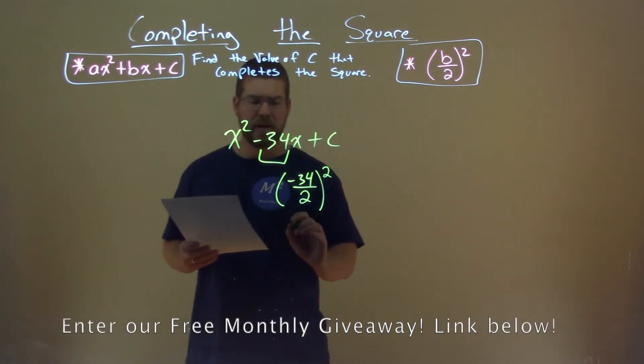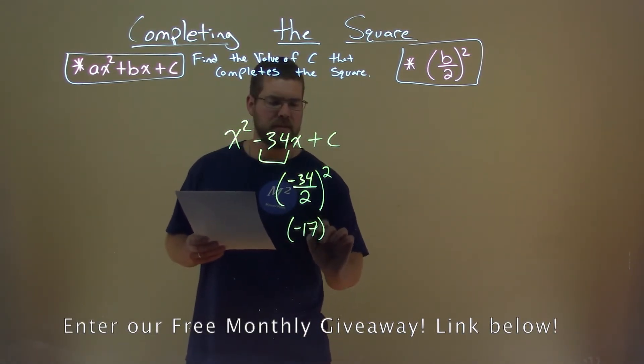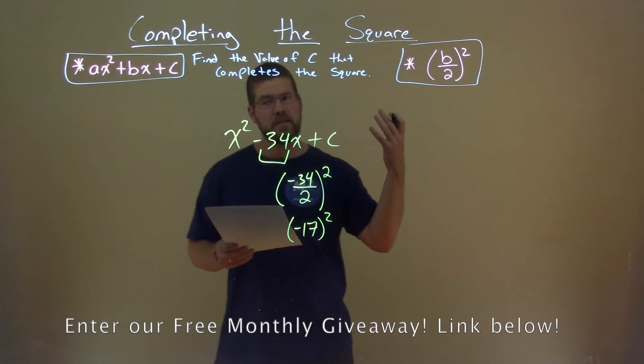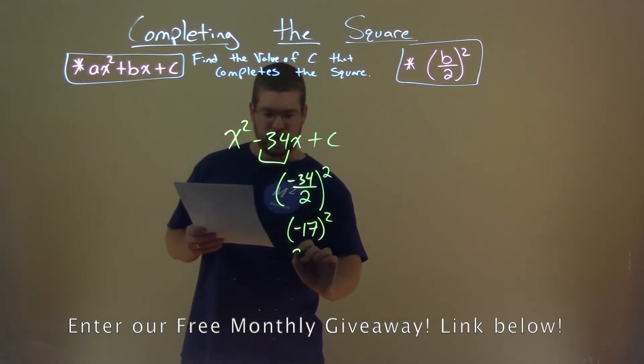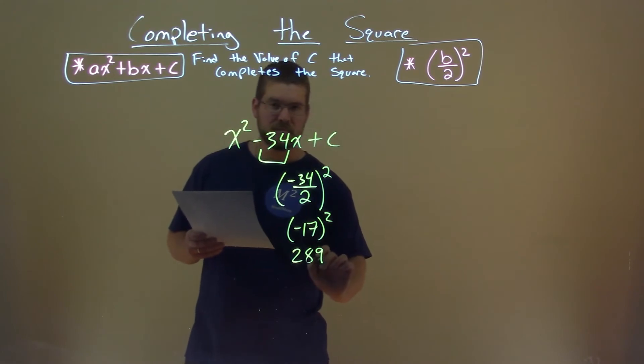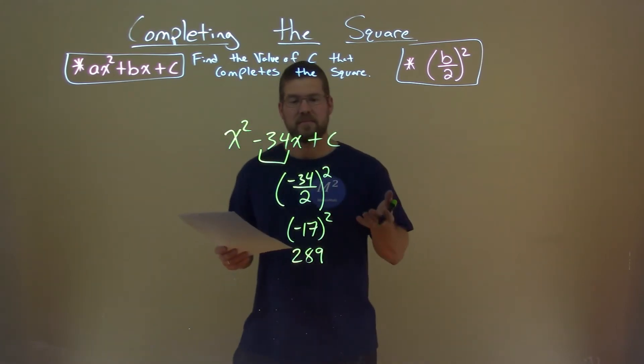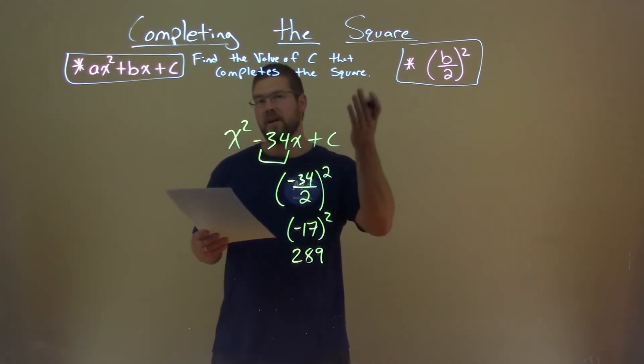Well, negative 34 divided by 2 is negative 17. Negative 17 squared is a positive number, and that's just 289. And so 289 is the value of c that completes the square.